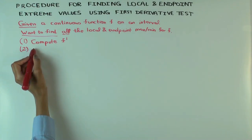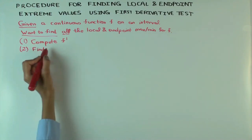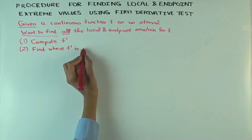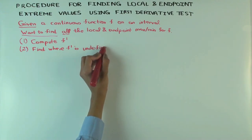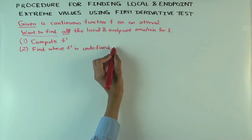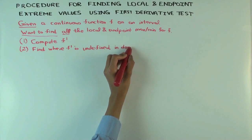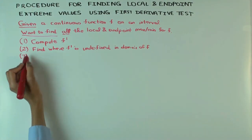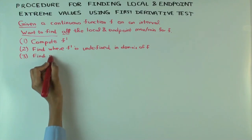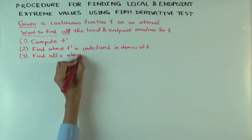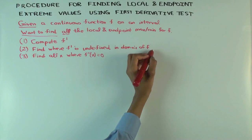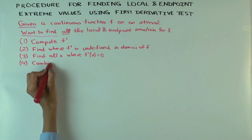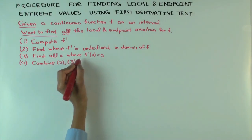The next step is to find where F prime is undefined. Since F is already continuous on an interval — I'm assuming that — we care about points where F is defined but F prime is undefined, within the domain of F. Then find all the x where F prime is zero. Together, the solutions to these two things give you the critical points, and these are precisely the candidates for local max and min.